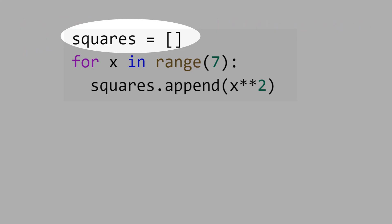First, let's create an empty list to store the square numbers. For x in range of 7, append x power 2 to the list squares.